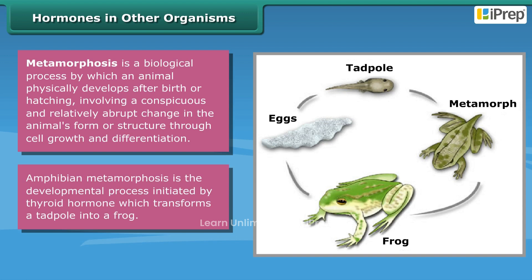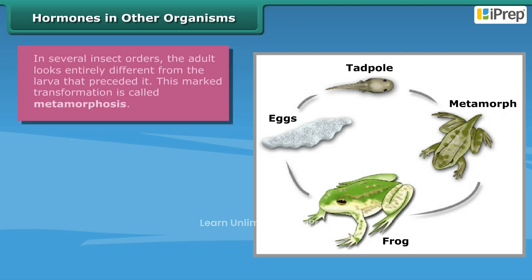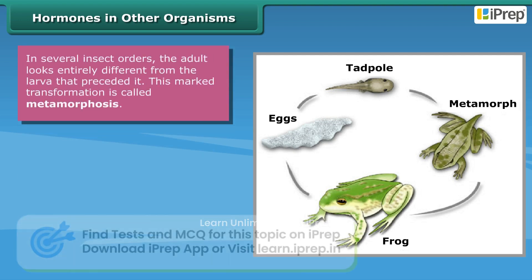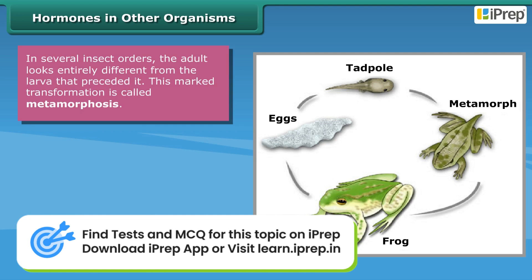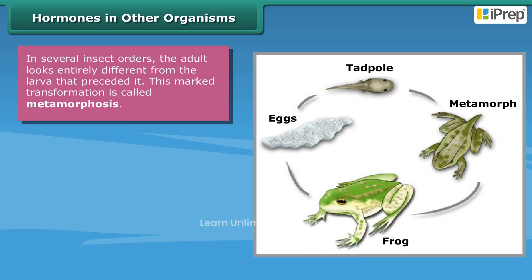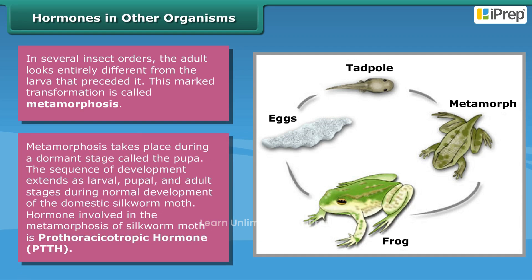Amphibian metamorphosis is the developmental process initiated by thyroid hormone, which transforms a tadpole into a frog. In several insects, the adult looks entirely different from the larva that preceded it — this marked transformation is called metamorphosis.